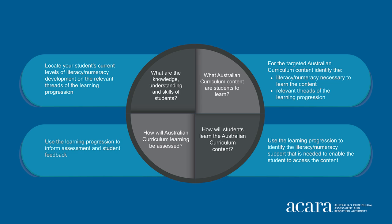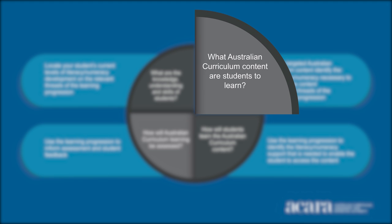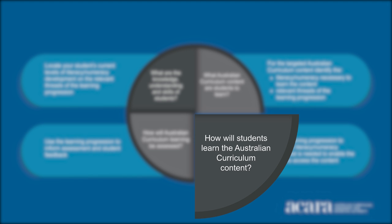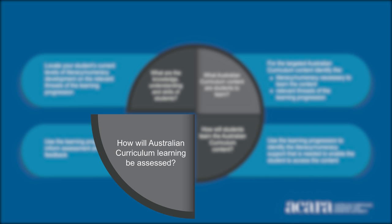There's no one approach to teaching and learning, but this diagram aims to show how the learning progressions can be used in the four phases of the teaching cycle. The top left quadrant focuses on identifying what students already know and can do. The top right focuses on what you want students to learn. The bottom right quadrant focuses on how your students will learn the content, and the bottom left quadrant on how you will know when your students have learnt it.